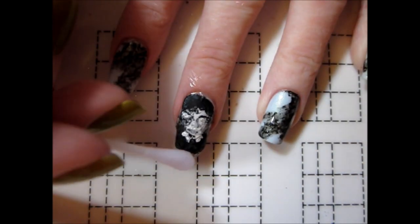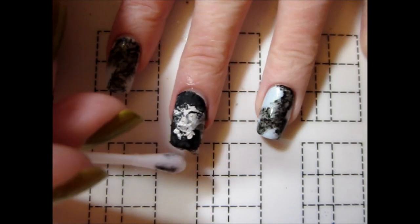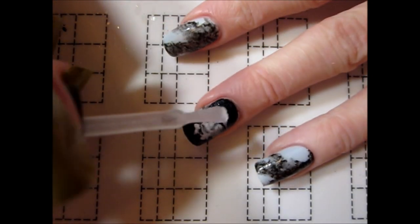Using a cotton swab dipped in acetone, I dissolved the excess decal before sealing all of my nails with a satin top coat.